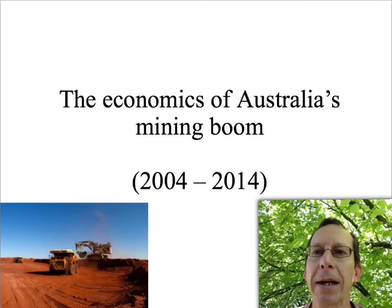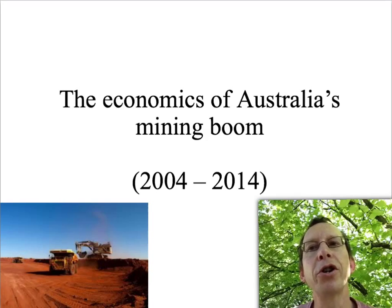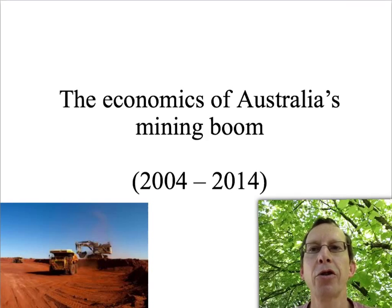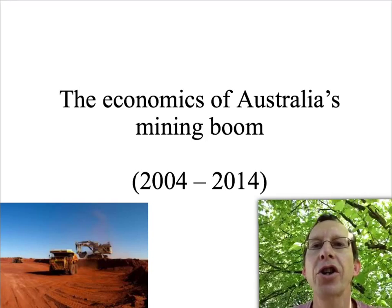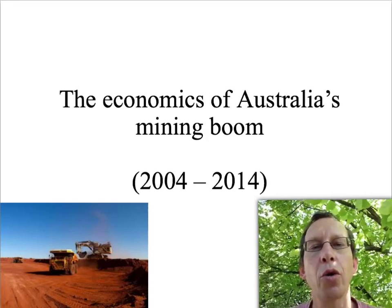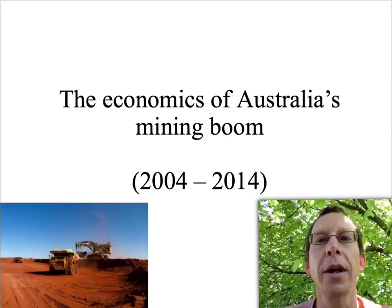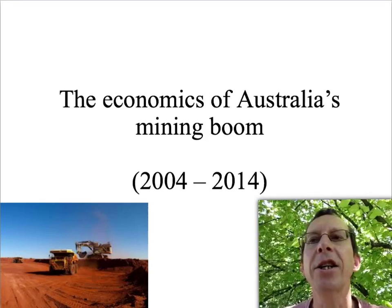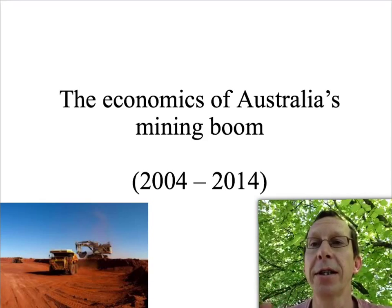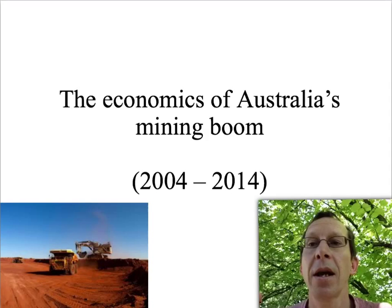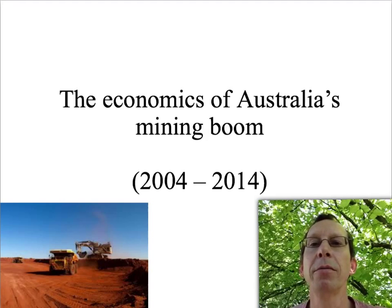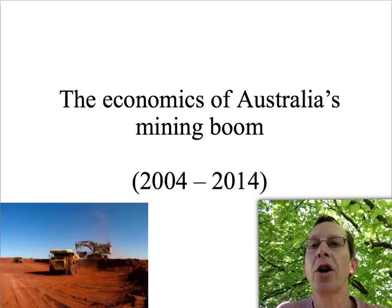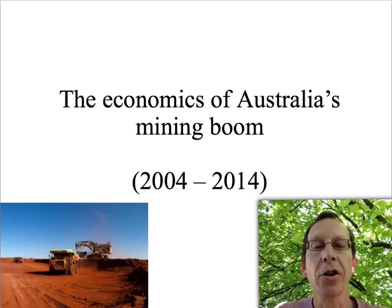China had been growing rapidly for about a decade, but China was a traditional producer of iron ore and coal, so Chinese miners had competed with Australian miners. But around 2004, the Chinese economy reached the size where it could not produce all the iron ore and coal it needed, so it started to import from overseas. With the Chinese economy growing at around 12% per year and having a billion people, pushing demand for iron ore and coal to the right had a big effect on prices.